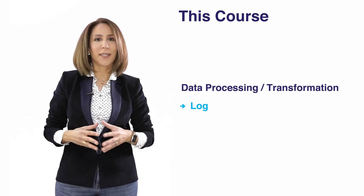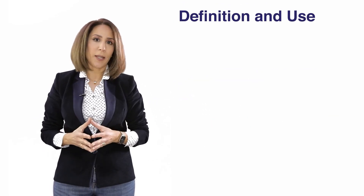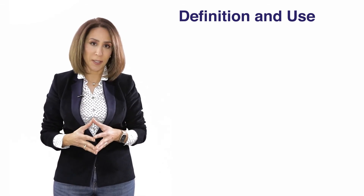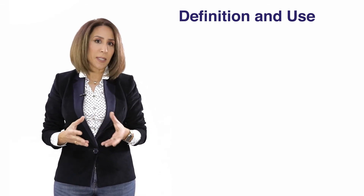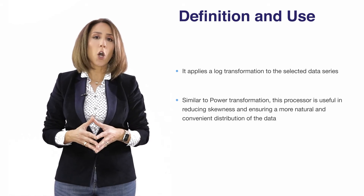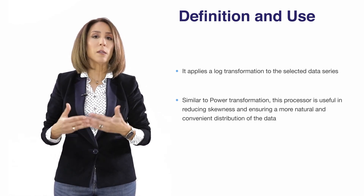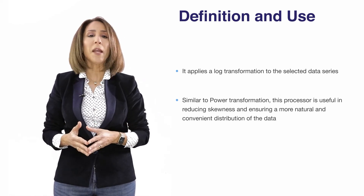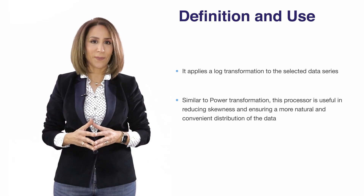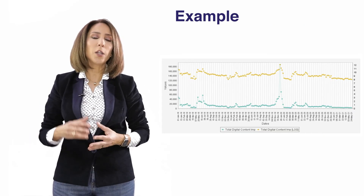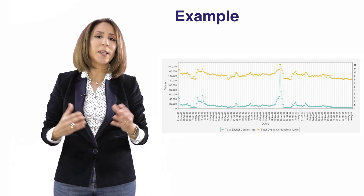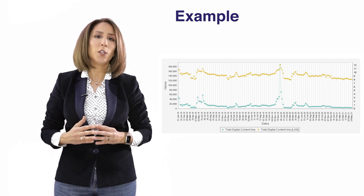The Log Processor allows you to apply a natural log to your data series. Sometimes you want to reduce the skewness in your data or achieve a more convenient distribution — that's where you would apply this processor. This is an example of how log can be applied to your data to reduce some of its skewness.